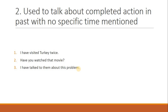اسی طرح آپ پانچ sentences بنائیں — کون کون سے کام آپ نے کیے ہیں۔ For example، university life میں آپ نے کیا کیا، یا زندگی میں کیا کیا ہے — کوئی بھی topic لیں اور اس پر پانچ دس sentences بنائیں۔